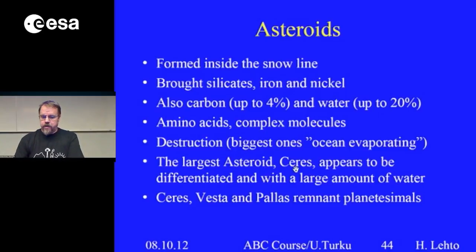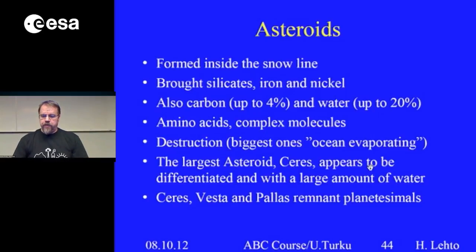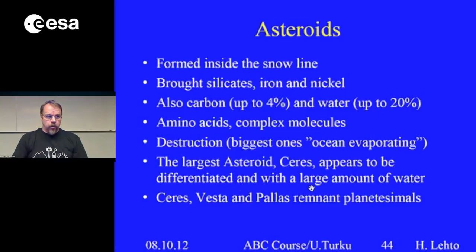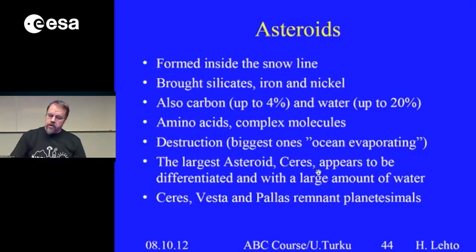The largest asteroid, Ceres — also classified as a dwarf planet — appears to be differentiated with a heavier core and seems to have a very large amount of water, maybe up to 25%. Ceres, Vesta, and Pallas, the largest asteroids, are thought to be remnants of planetesimals. This shows that planetesimals and asteroids brought us water, amino acids, complex molecules, iron, nickel, carbon, and water — you're starting to get all the important ingredients needed for life.